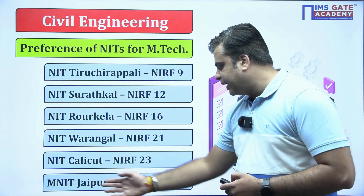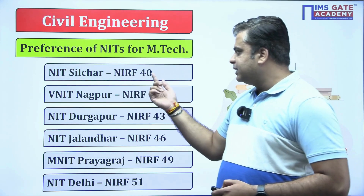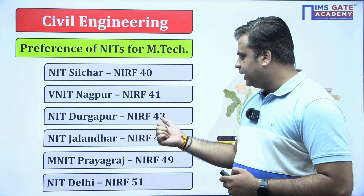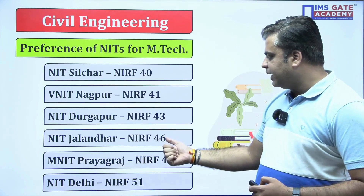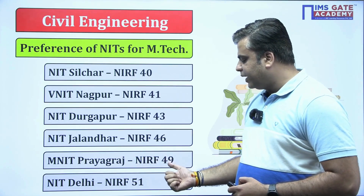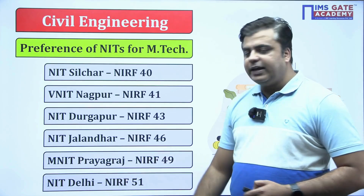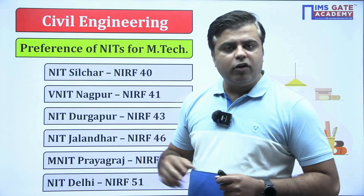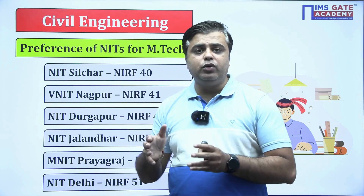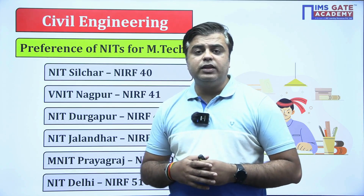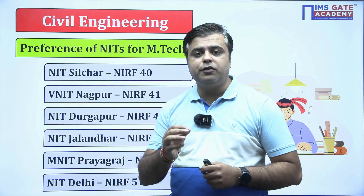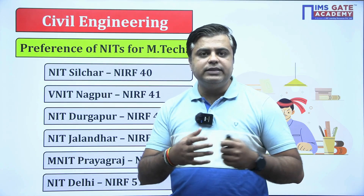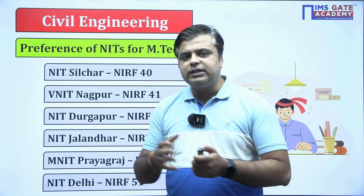The next NIT is MNIT Jaipur with NIRF ranking of 37. Then NIT Silchar with NIRF ranking of 40, VNIT Nagpur with NIRF ranking of 41, NIT Durgapur with NIRF ranking of 43, NIT Jalandhar with NIRF ranking of 46, MNIT Prayagraj with NIRF ranking of 49, and NIT Delhi with NIRF ranking of 51. These NITs provide a good salary package — the average salary offered lies in the range of 10 to 12 LPA. Over the years the placement scenario for these NITs has been fantastic, with more than 80% of students placed in consultancy services or joining colleges after completing masters.